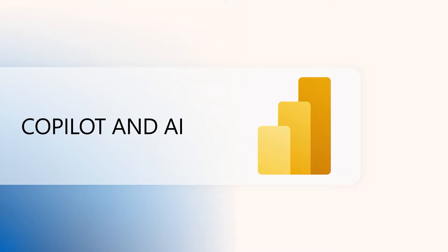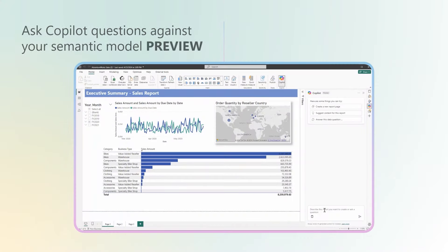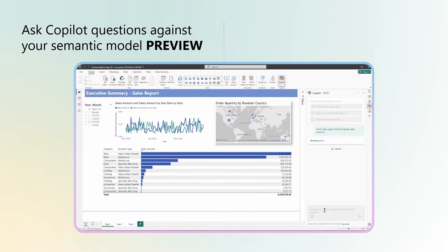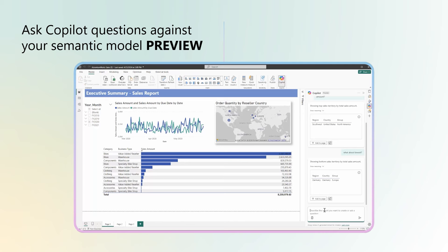Power BI Copilot and AI. You can now ask Copilot for data from your entire semantic model in Power BI Desktop. Just tell Copilot what you're looking for, and Copilot will query your model to answer your questions with a visual. To use this new capability, you have to have the preview feature for Copilot chat pane in Report View turned on. If you've already done this, there's nothing else you need to do — just go out and give it a try.